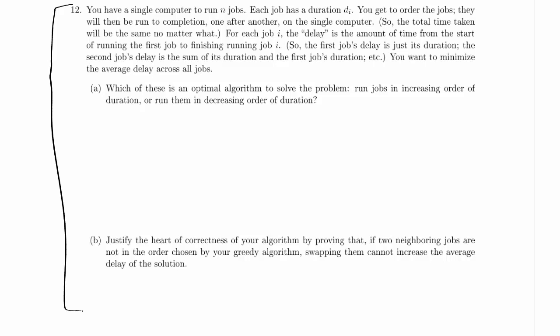You basically get to choose a permutation of the jobs, and then they will run to completion without you getting to interfere at that point. So the total time taken will be the same no matter what, because you're going to run all the jobs. They each have some fixed duration. If you add up all those durations, you're going to get the total time taken. So obviously we're not going to optimize the total time taken.